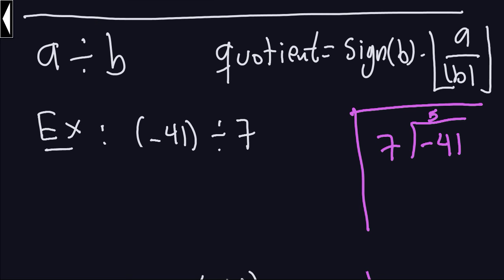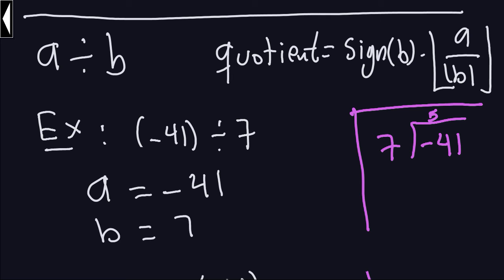So in this case, what is A? A is always the dividend, so A will be negative 41. And B is the divisor — the divisor here is 7.